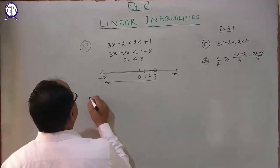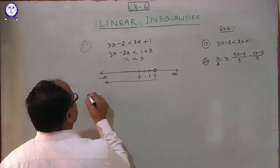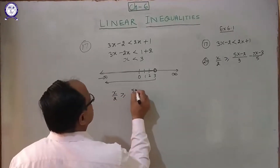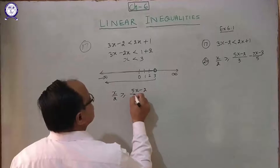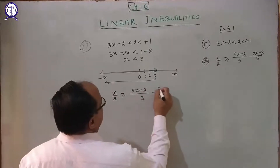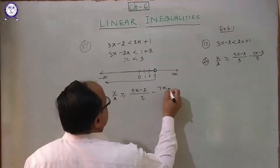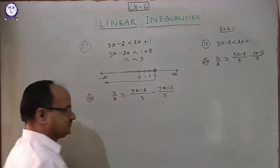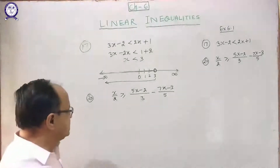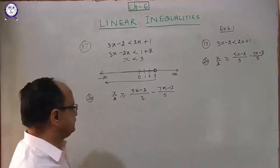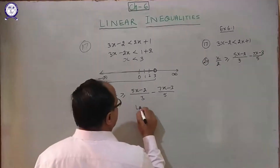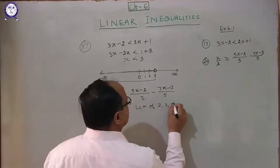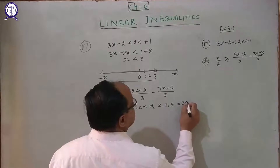Question number 20: x over 2 greater than or equal to (x minus 2) over 3, minus (7x minus 3) over 5. What is the LCM of 2, 3, and 5? The LCM of 2, 3, and 5 is 30.